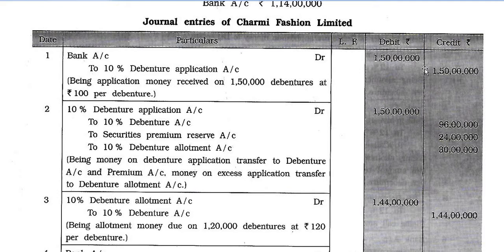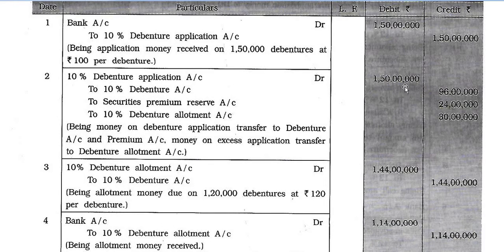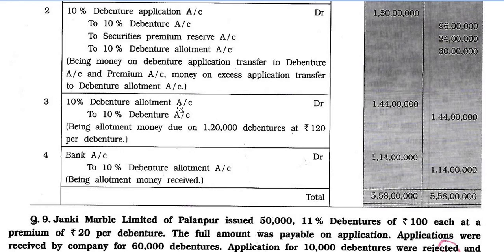Journal entries of Charmy Fashion Ltd. Entry 1: Bank account debit Rs. 1,50,000 to 10% Debenture Application account Rs. 1,50,000 — being application money received on 1,50,000 debentures at Rs. 100 per debenture. Entry 2: 10% Debenture Application account debit Rs. 1,50,000 to 10% Debenture account Rs. 96,000, to Security Premium Reserve account Rs. 24,000, and to 10% Debenture Allotment account Rs. 30,000 — being transfer of application money and premium to debenture account and excess to allotment account. Entry 3: 10% Debenture Allotment account debit Rs. 1,44,000 to 10% Debenture account Rs. 1,44,000 — being allotment money due on 1,20,000 debentures at Rs. 120 per debenture. Entry 4: Bank account debit Rs. 1,14,000 to 10% Debenture Allotment account Rs. 1,14,000 — being allotment money received.